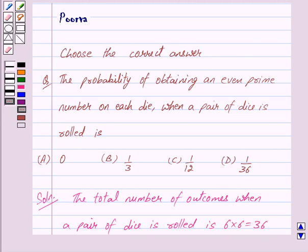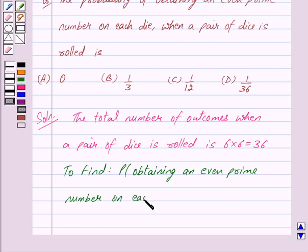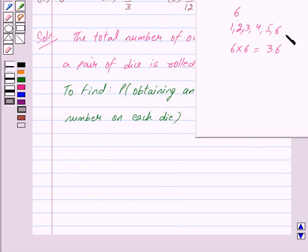We have to find the probability of obtaining an even prime number on each die. Out of the numbers 1 to 6, there is only one even prime number, that is 2. So an even prime number on each die will be (2, 2).